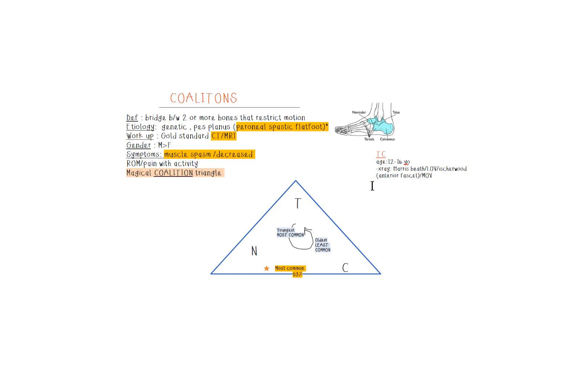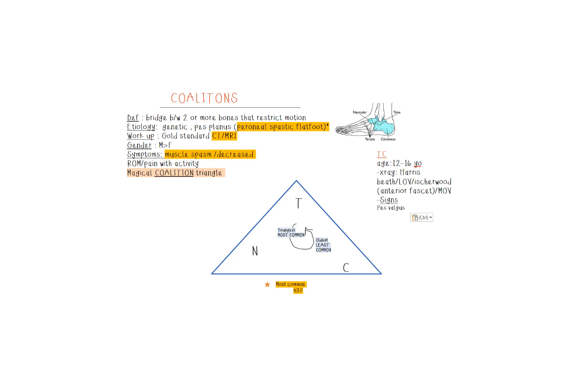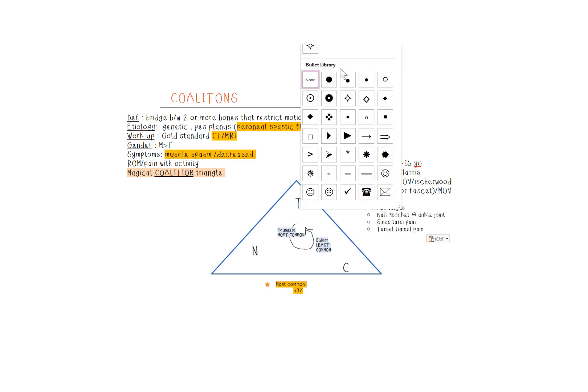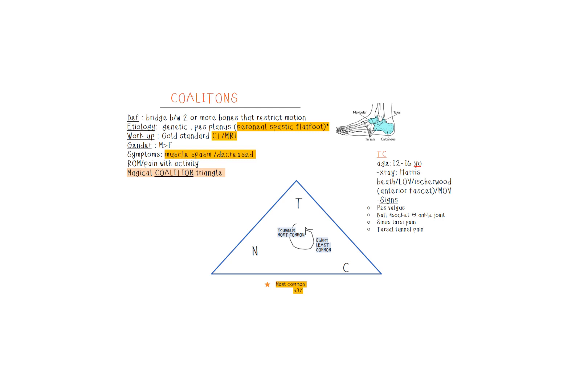After the age and the x-ray, the next component is the signs. Some of the signs seen specifically for the talocalcaneal is pes valgus, the ball socket at the ankle joint, the sinus tarsi pain, the tarsal tunnel pain. Very commonly one is the halo sign, which is a C-shape. The inferior portion is made out of the sinus, the sustentaculum tali, and then you've got the medial aspect of the talar dome. Then comes the talar process beaking.